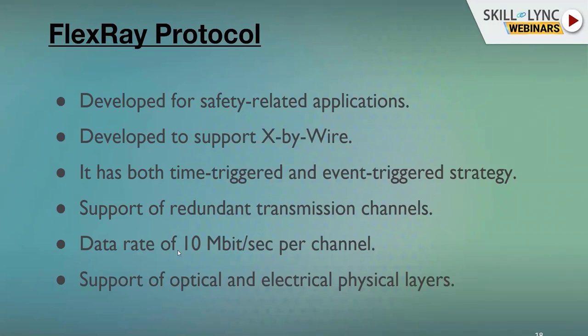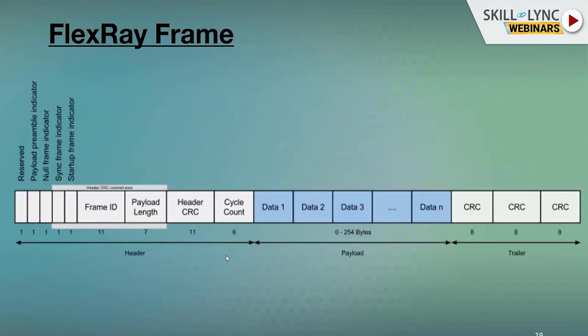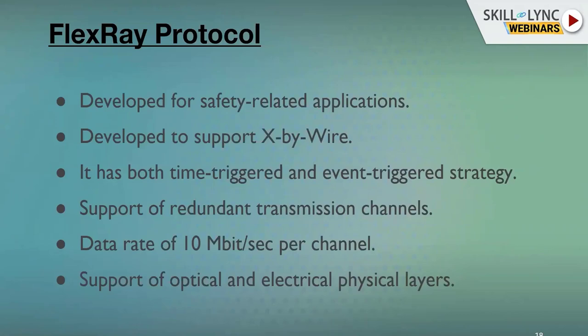FlexRay supports redundant transmission channels to reduce duplication. Its data rate is 10 Mbps — CAN's maximum was 1 Mbps, so FlexRay is 10 times faster than CAN. FlexRay also supports both optical and electrical physical layers.